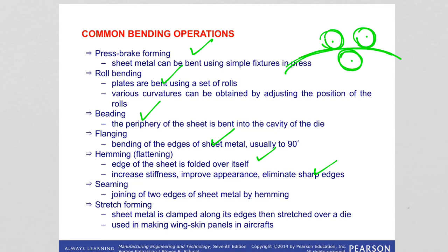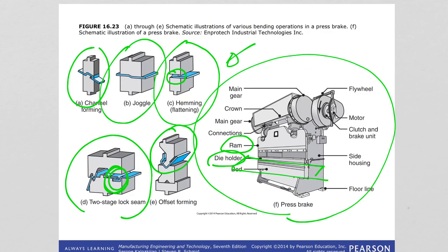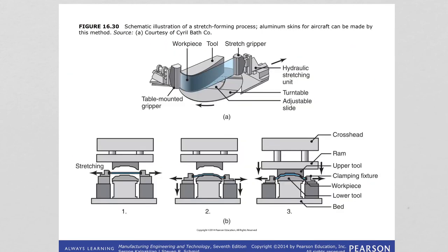Stretch forming — as the name implies, you are stretching the sheet metal. Applications include aircraft panels. You can see there is the die and the ram applies pressure. Another example shows the stretching of the sheet against the die.